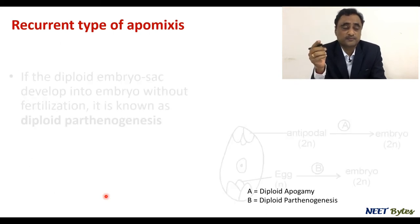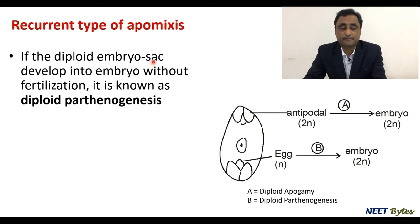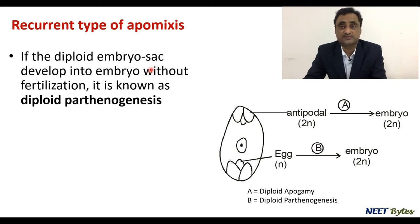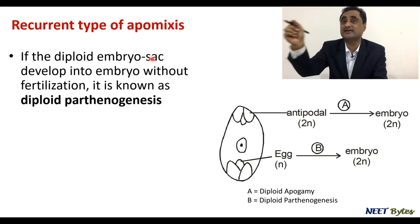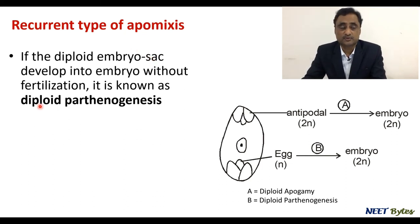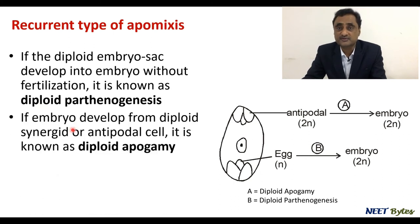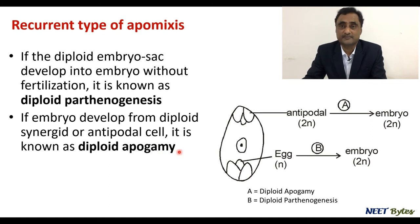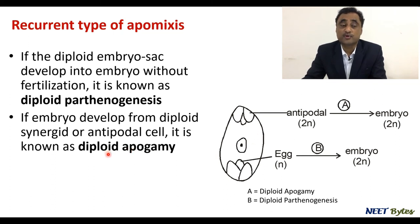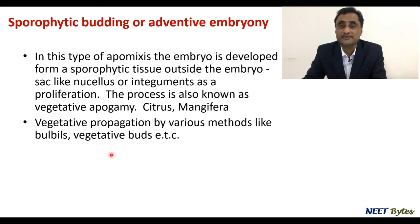Now, if the diploid embryo sac develops into an embryo without fertilization, this is called diploid parthenogenesis, because parthenogenesis refers to the egg getting converted into embryo. Since it is diploid, we use the term diploid parthenogenesis. If the embryo develops from the synergid or antipodal cell, it is called diploid apogamy — apogamy because the gametophyte is developing into a sporophyte (the embryo), and diploid because the cells involved are diploid.